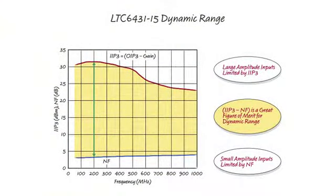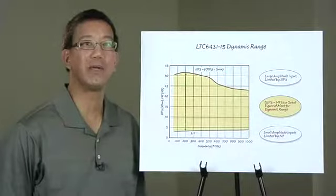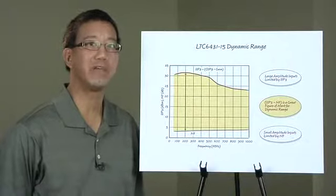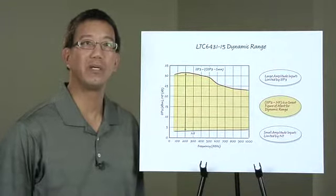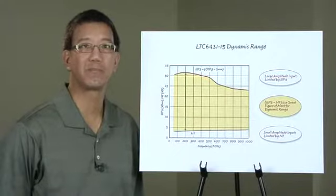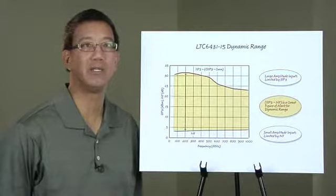Probably the greatest focus of the LTC6431-15 design was dynamic range. At some point, all amplifiers limit system performance. When the input signal gets too large, distortion, or when the signal gets too small, noise. Both of these characteristics have to be considered simultaneously. If we look at the input port of an amplifier, a good figure of merit would be the input IP3 minus the noise figure. The LTC6431-15 has been carefully optimized to maximize this value, thereby maximizing dynamic range. With an input IP3 of 32 and a noise figure of 3.3, the LTC6431-15 achieves a world-class value of 29 dB using this metric.